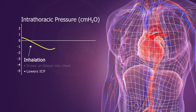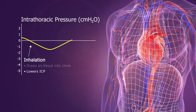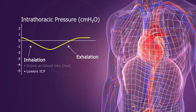As a person exhales, the diaphragm moves up and the chest wall moves in. This creates a positive pressure that forces air out, inhibits blood return to the chest, and slightly raises ICP.